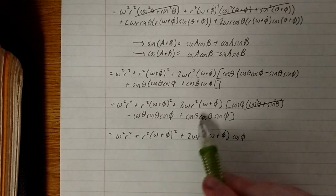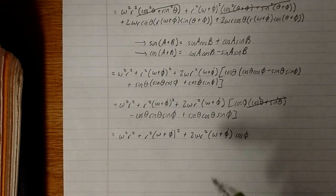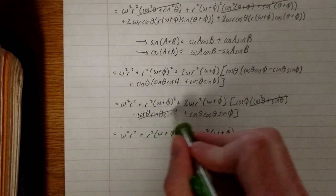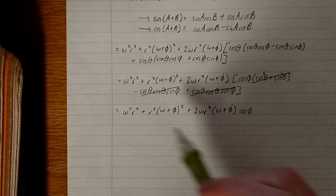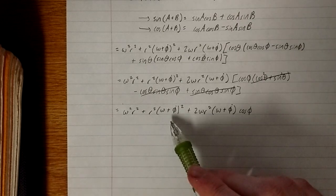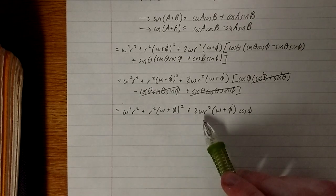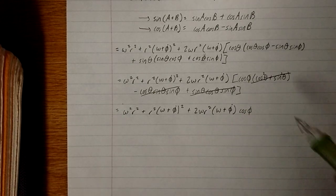And this term here cancels with this term here. Cosine theta, sine theta, cosine theta, sine theta, sine phi, sine phi. So, this cancels out with this. And we're left with the much prettier omega squared r squared plus r squared quantity omega plus phi dot squared plus 2 omega r squared quantity omega plus phi dot cosine phi. Could be a lot worse.